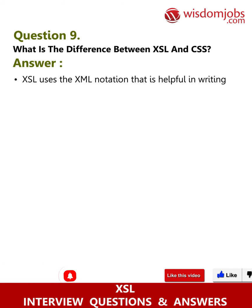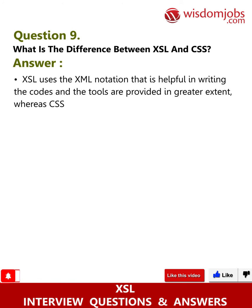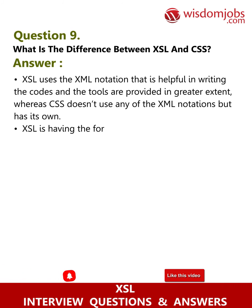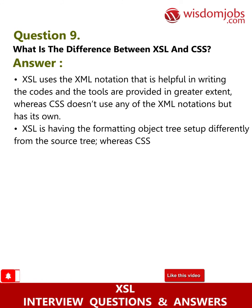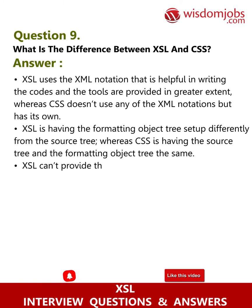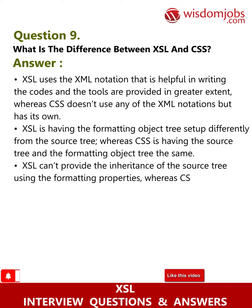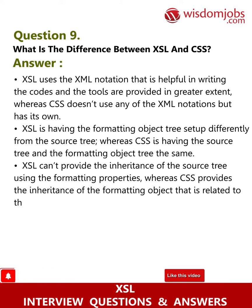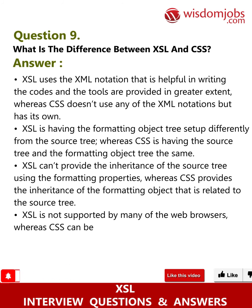Question 9: What is the difference between XSL and CSS? XSL uses XML notation that is helpful in writing code and provides tools to a greater extent, whereas CSS doesn't use any XML notations but has its own syntax. XSL has the formatting object tree set up differently from the source tree, whereas CSS has the source tree and the formatting object tree the same. XSL can't provide inheritance of the source tree using formatting properties, whereas CSS provides inheritance of the formatting object related to the source tree. XSL is not supported by many web browsers, whereas CSS can be read by modern web browsers.